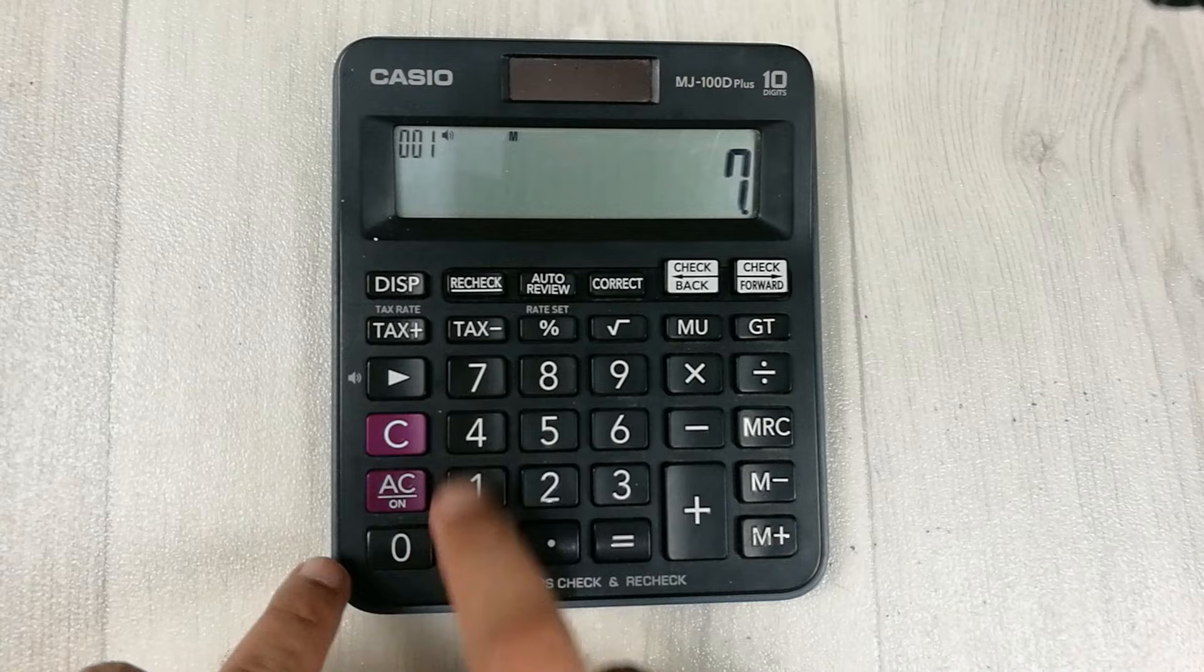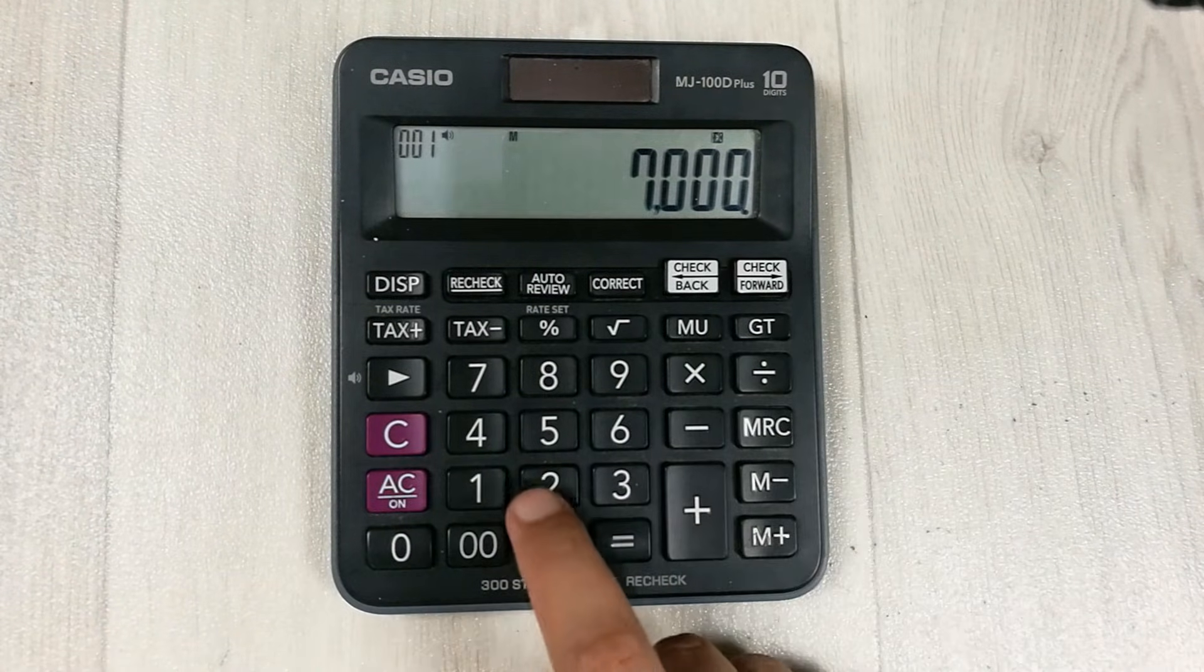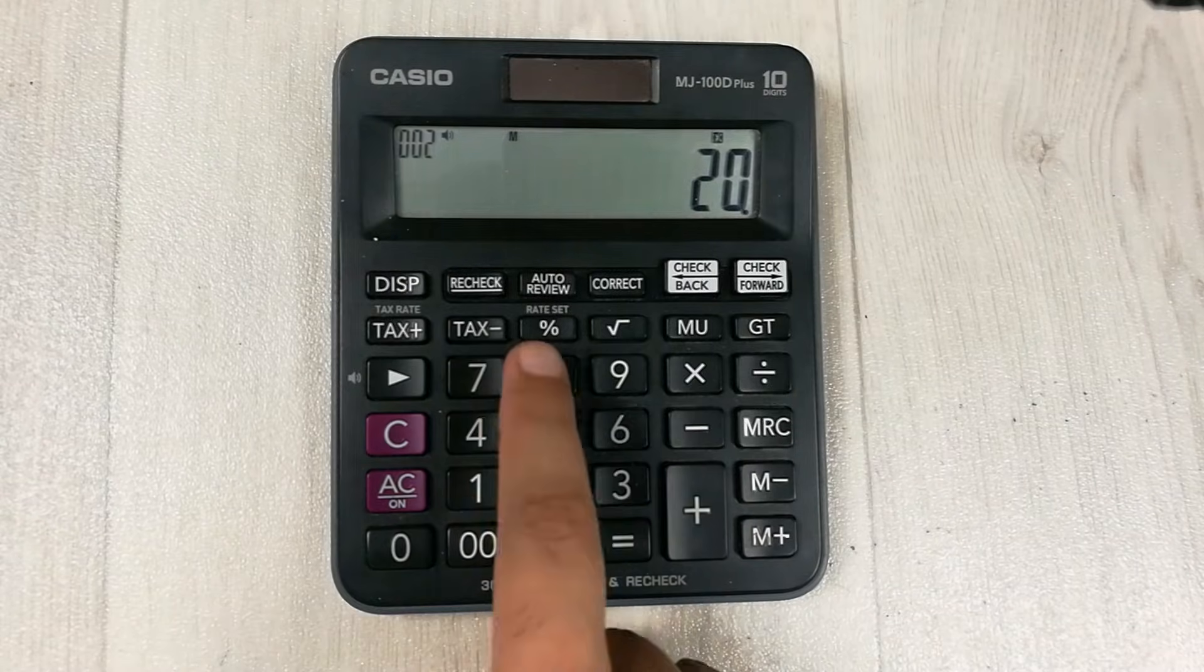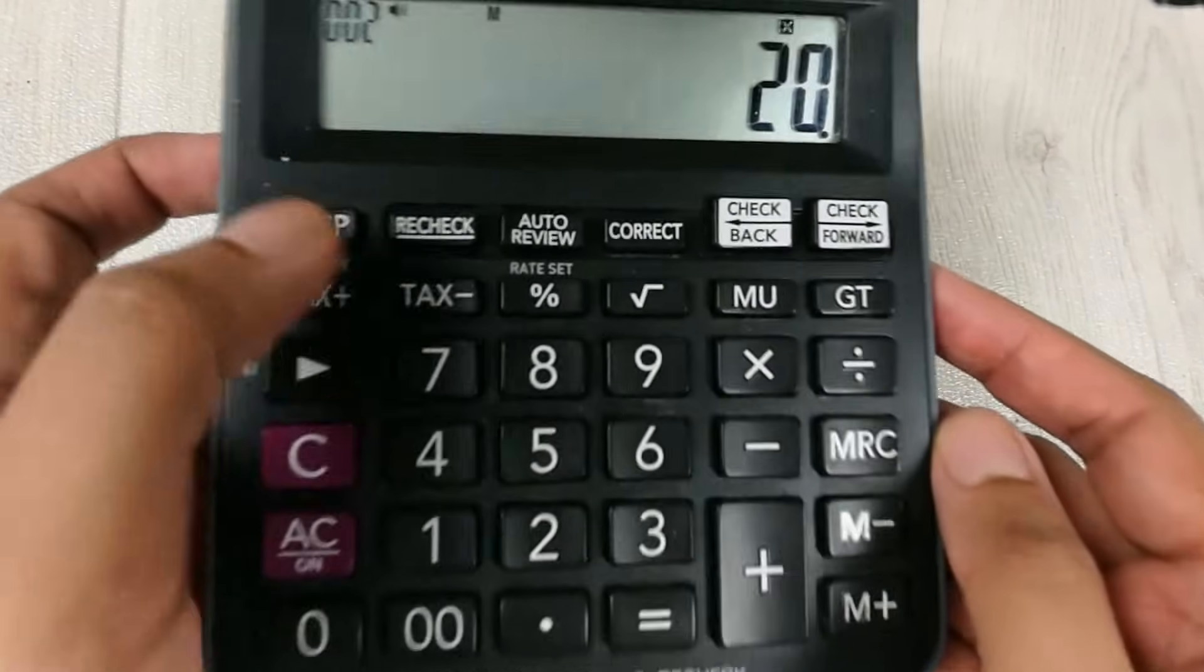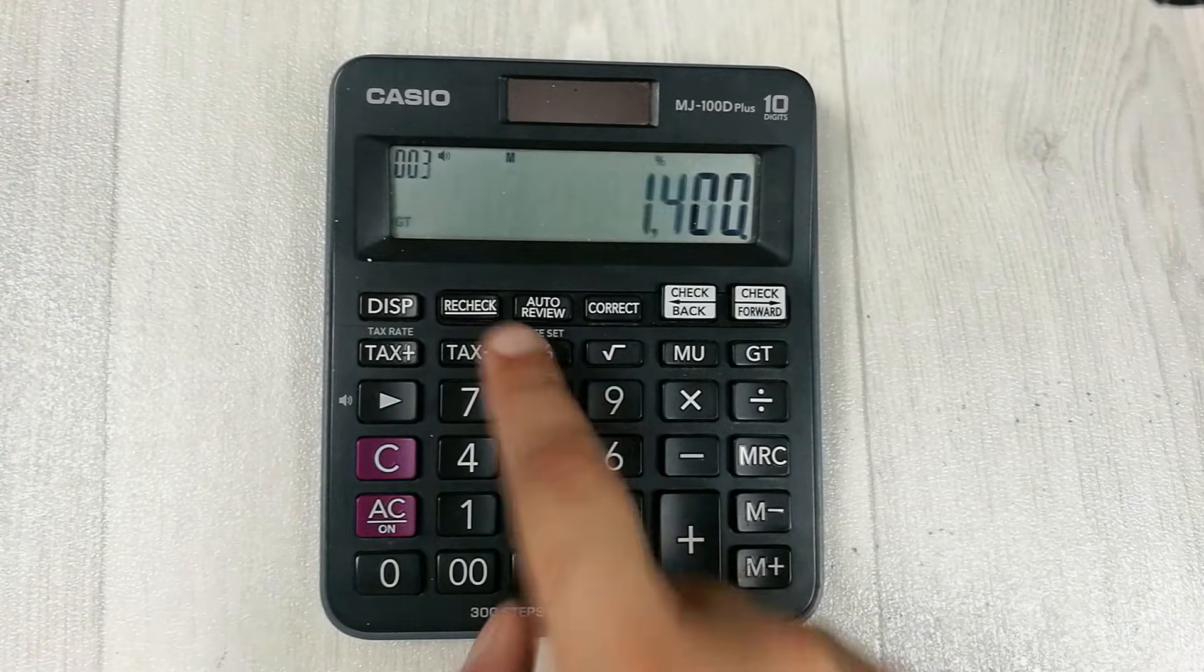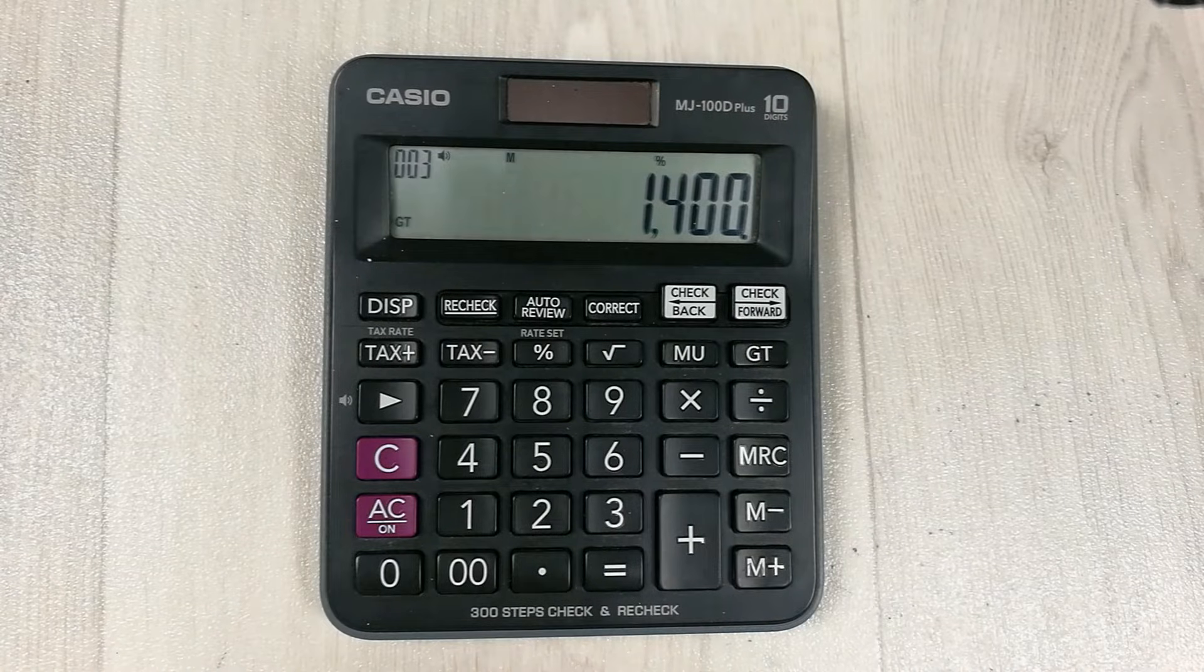What you will do is first of all, you type 7000, you multiply it with 20, and then you press this percentage button over here. Just press the percentage button, and in the last step, just press this minus button.